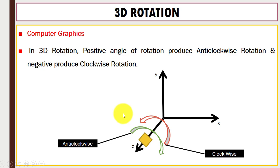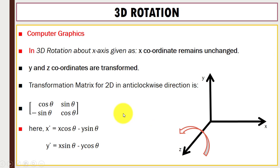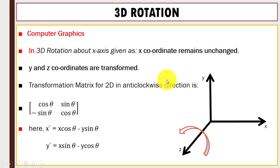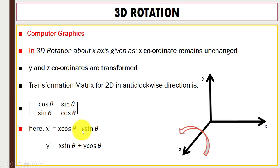Suppose we want to rotate an object along the x-axis — this is 3D rotation about the x-axis. When we rotate along the x-axis, the x-coordinate remains unchanged. We then apply a transformation on the y-z plane, using the same transformation matrix as in 2D rotation in the anticlockwise direction.